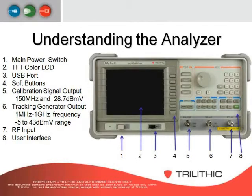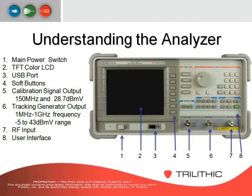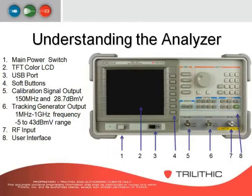This is a typical face of a spectrum analyzer. You have your main power switch to turn on your unit, and on the 8821QR it has a color LCD display. Number three is your USB port, which is mainly for transferring files. It allows you to put a memory stick on that port and save files based off of the USB routing.